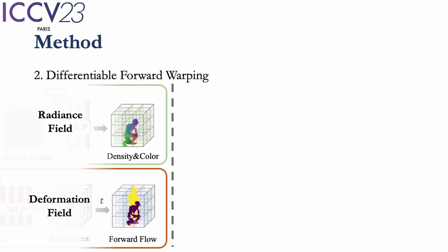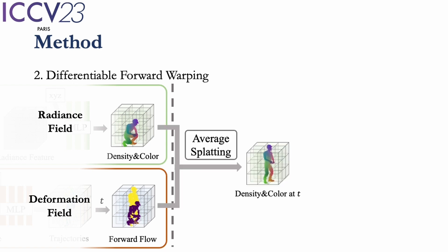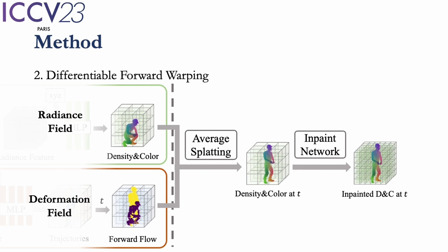With the estimated canonical density color grid and the corresponding forward flows, we propose a differentiable forward warping method. We first use average splatting to warp the density and color grid from canonical time to time t. We then use in-paint network to in-paint the empty holes of the warped grids.